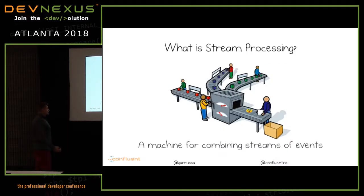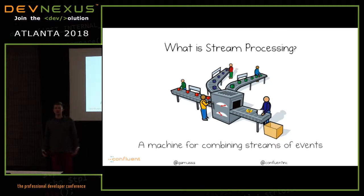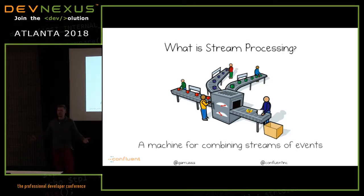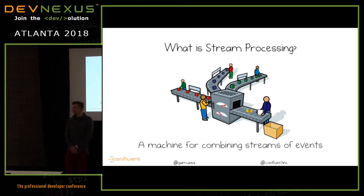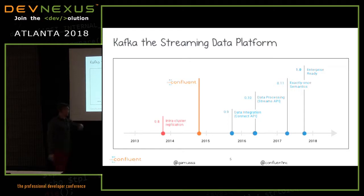What is stream processing essentially? You have multiple streams of data and some sort of device, software, or framework that will produce ultimate results — either a stream or some sort of answer. Here's a quick story about stream processing with Kafka. Kafka itself was open-sourced, the company was founded, and some interesting things were added to the platform.